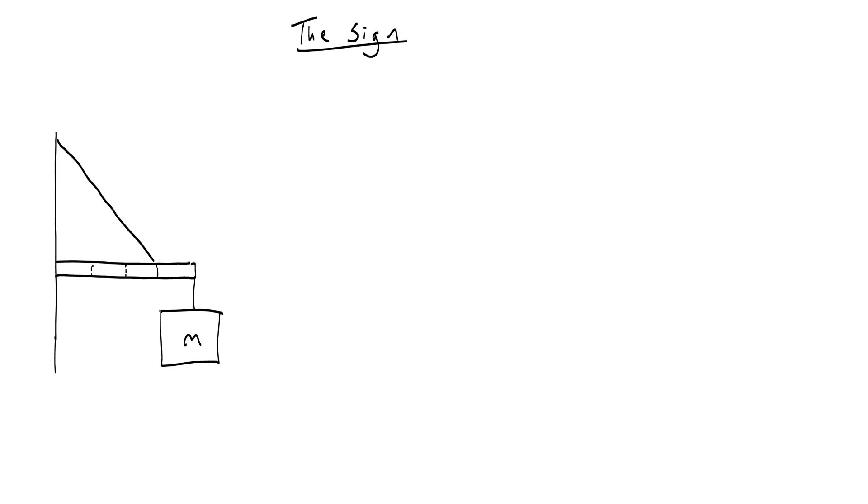Okay, so in this problem we have a classic torque balance or equilibrium problem called the sign, where you have some sign hanging on a rod or maybe a beam that's attached by some rope to a wall that makes an angle with that wall that we'll call theta.